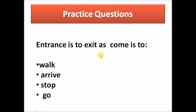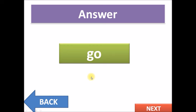Let's look at another example. Entrance is to exit as come is to. Let's look at the keywords. Entrance and exit. What is the relationship between entrance and exit? Yes, they are opposite. The opposite of entrance is exit. So the opposite of come would be, would it be walk, arrive, stop, or go? Definitely the opposite is go and the answer is go. Awesome.